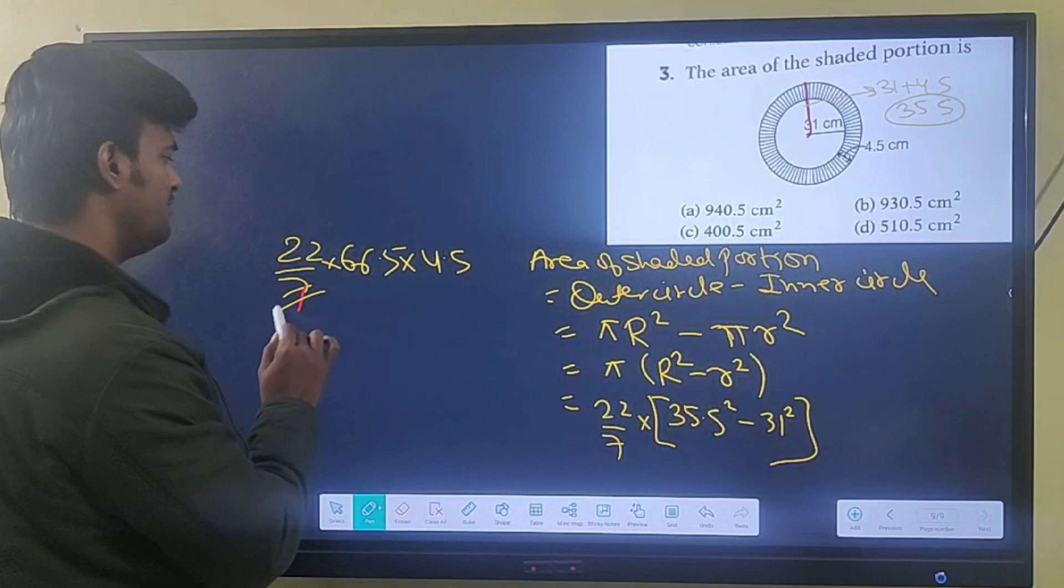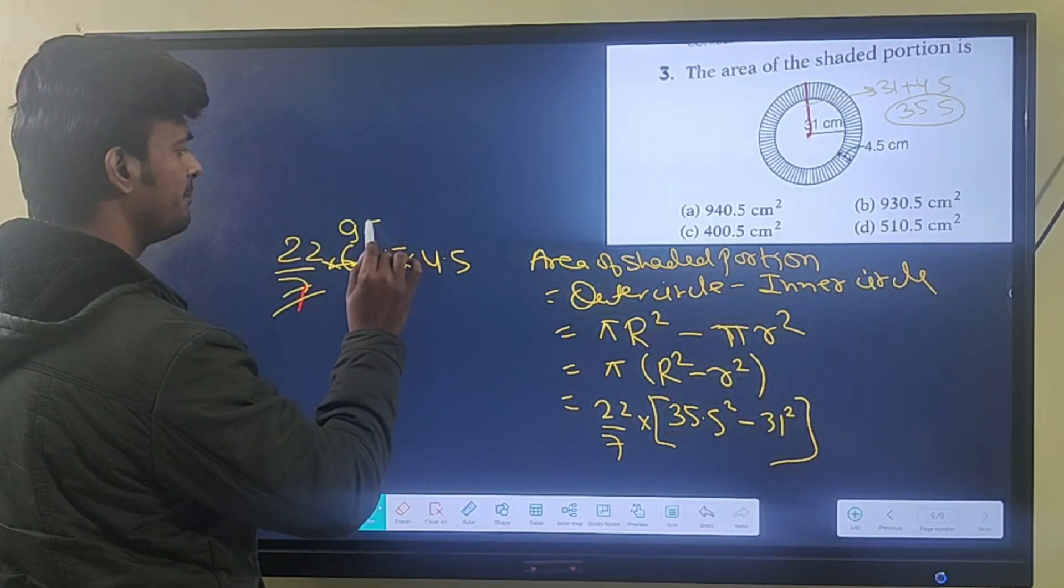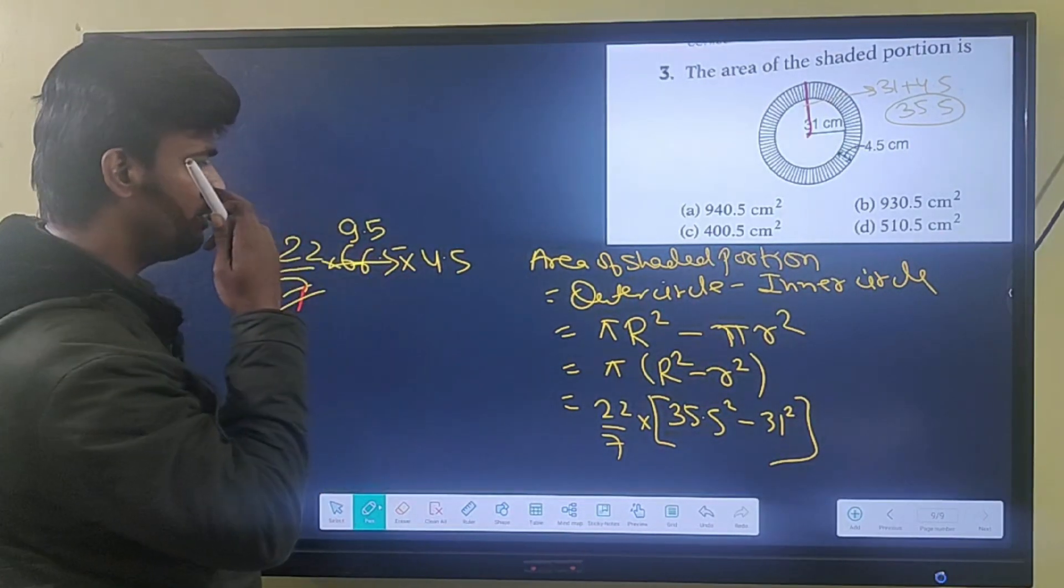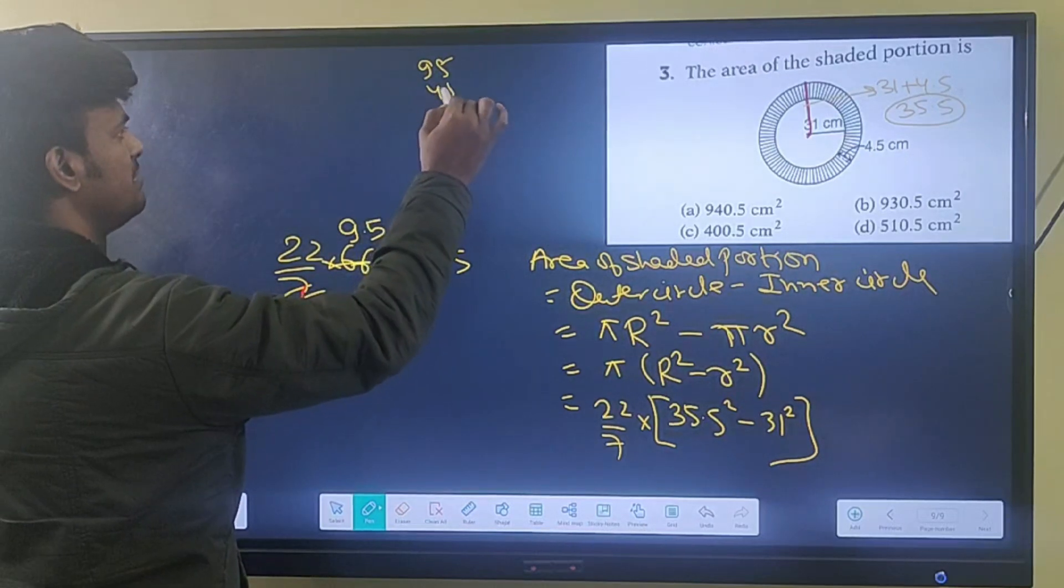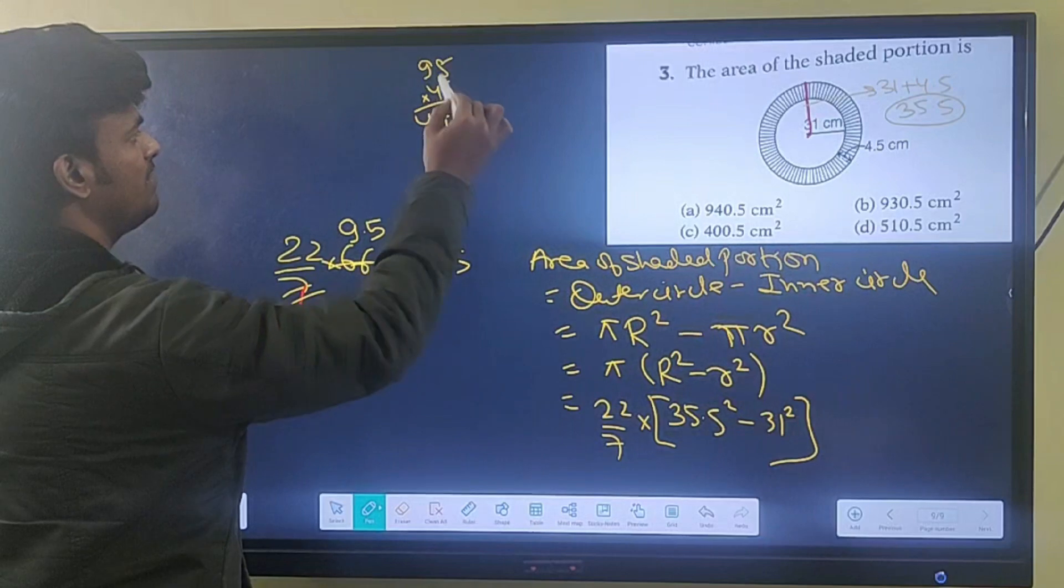66.5 and 4.5. What remains: 22 multiply 9.5 multiply 4.5. 95 times 45 multiply gives 4275, divide by 22.